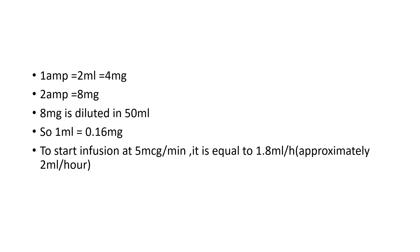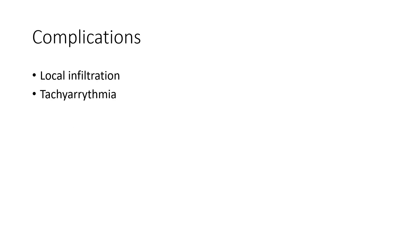To increase the infusion by 5 microgram per minute, increase the rate by 2 ml per hour. Coming to the complications of noradrenaline: local infiltration can cause pain, local vasoconstriction, and other tissue complications. It can also lead to tachyarrhythmia and other dysrhythmias, which may further cause serious cardiac complications. Therefore, the dosage and route of administration should be well monitored. At higher doses, noradrenaline should preferably be given through a central line rather than a peripheral cannula.